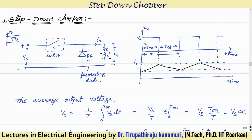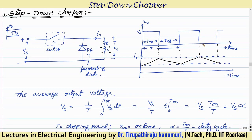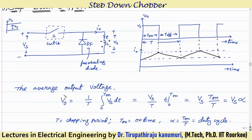Now calculating the average output voltage: since the output voltage is present only for some duration, its average value is less than the supply voltage. Average output voltage V_naught equals (1/T) times the integral from 0 to T-on of Vs dt, which gives Vs × (T-on / T). This ratio T-on/T is called alpha, the duty cycle — the ratio of on-period to total time duration T, where T is the chopping period.